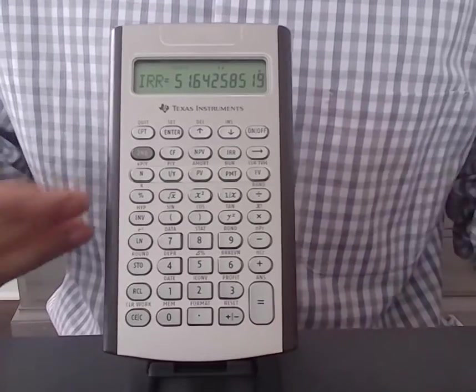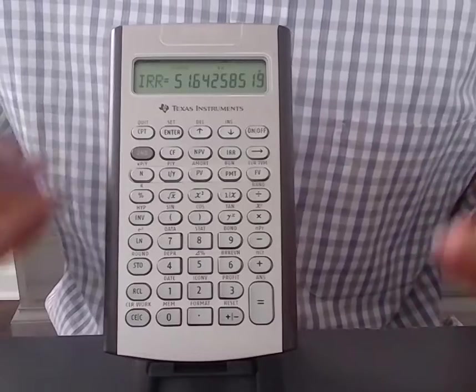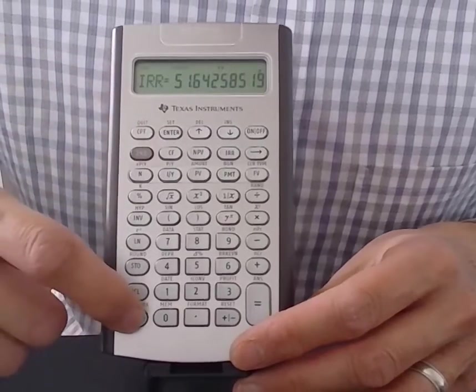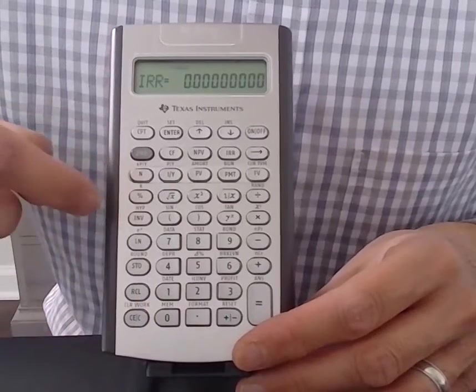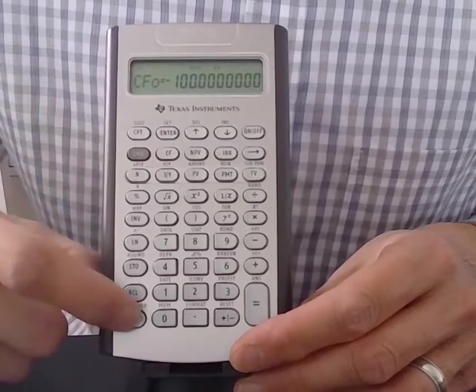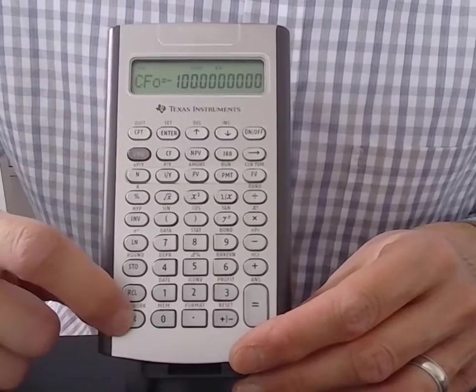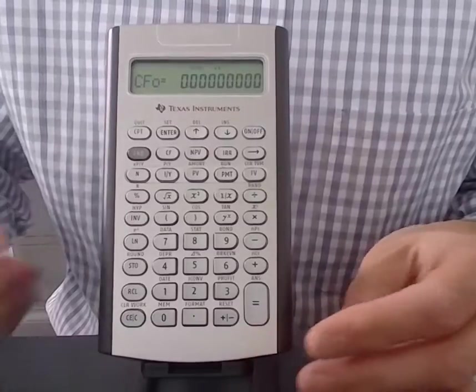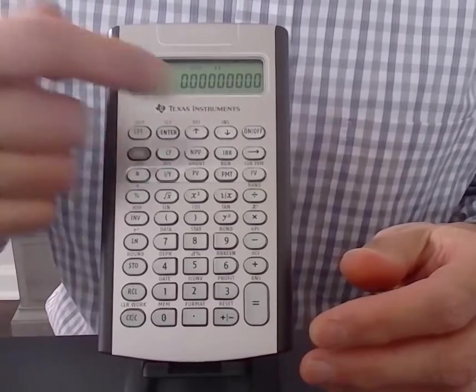And if you started this problem fresh and you hadn't done NPV already, remember the steps. You would have to go to the cash flow register. You would have to clear everything out by doing second clear work. And then you would start over, enter the cash flows, and then press the IRR button, and then compute.